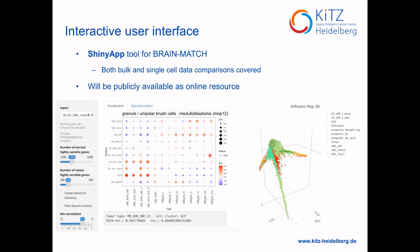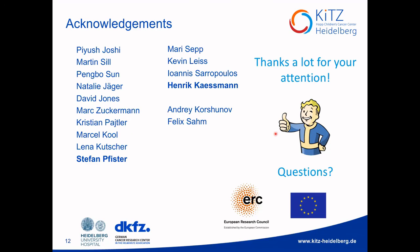I won't go through all other tumor types in detail, but everything we have in our results will be available for direct manual inspection via the Shiny app for Brain Match. It will have bulk data fully covered for global comparisons with additional adjustment of all the parameters integrated for similarity measurement, and in the same manner for all single-cell tumor sample comparisons, as I already demonstrated for medulloblastoma. The project involves many people and I am super thankful to everyone. We will be glad to answer any questions. Thank you.